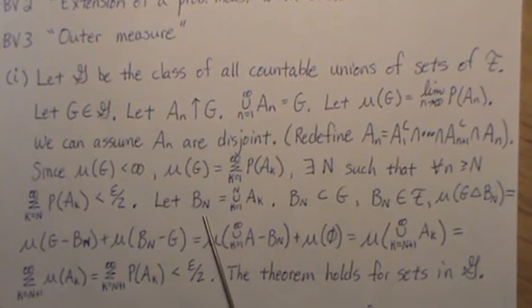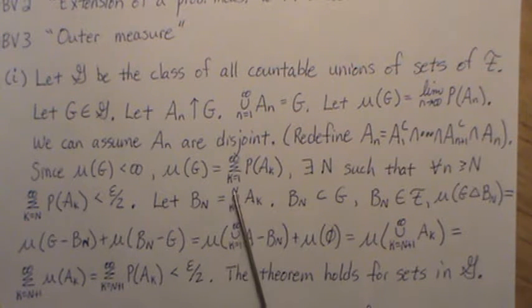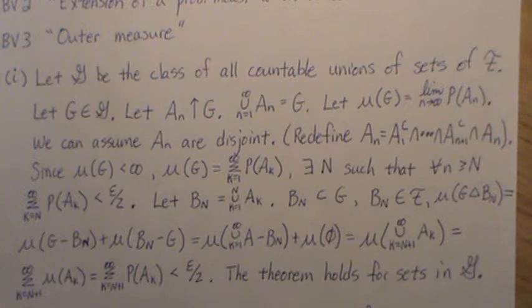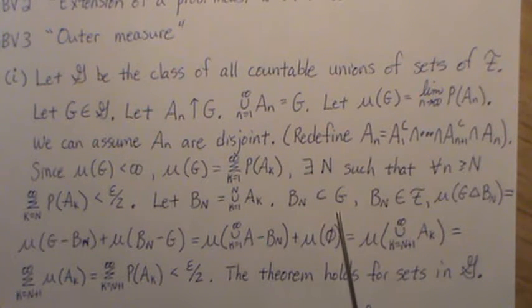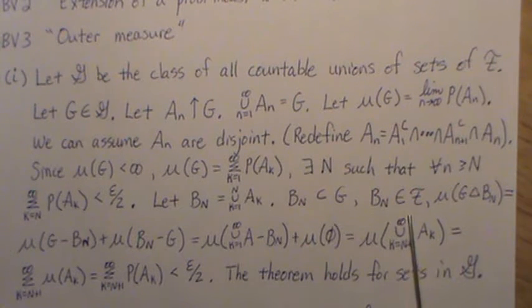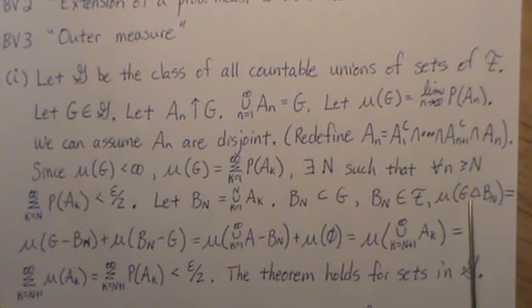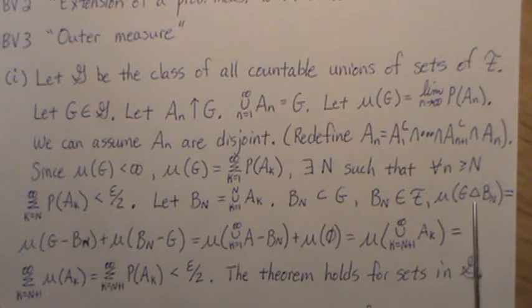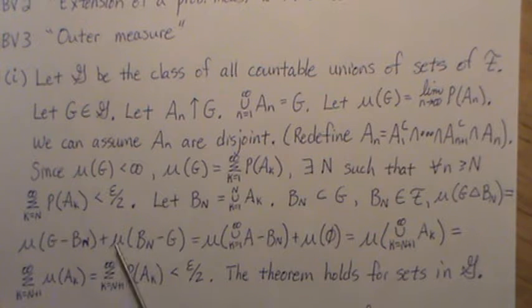And let's let B_N equal this union of A_k from 1 to capital N. So note that B_N is a subset of G because these are increasing sets to G. B_N is an element of the field.